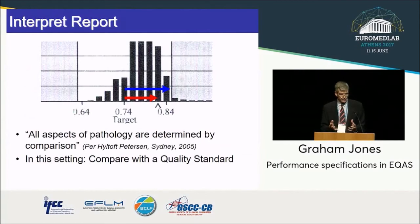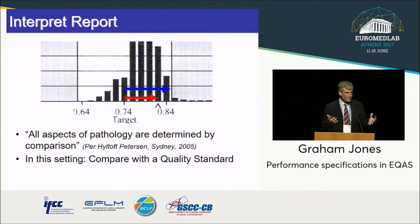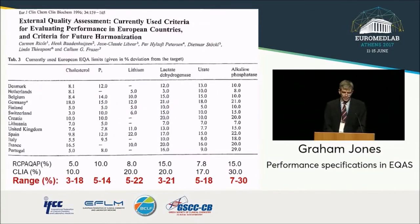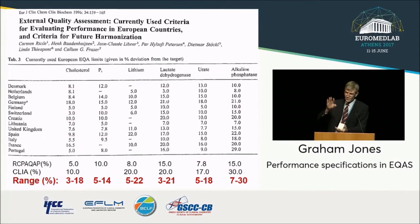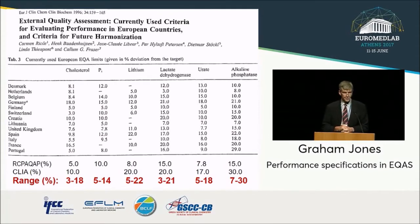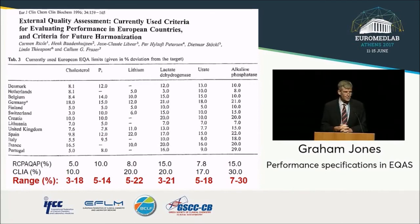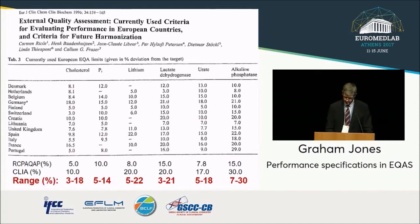How variable are performance specifications? This is a study from 1996 by Carmen Ricos, looking at different performance specifications for different external quality assurance programs. I've added our ones from the RCPA QAP, the CLIA guidelines, and in red you can see the range of different percent variation in performance specifications for a range of analytes — cholesterol, phosphate, lithium, LDH, urate, and alkaline phosphatase. The range is clearly wide. If you want to pass easily, go and choose an EQA with a wide one. If you want to hold yourself to the highest standard, choose one with a narrow one.